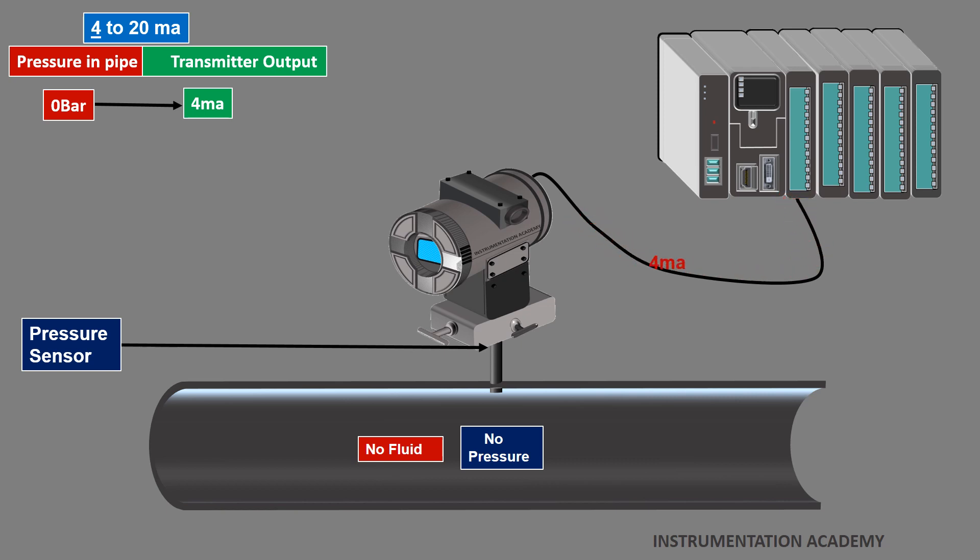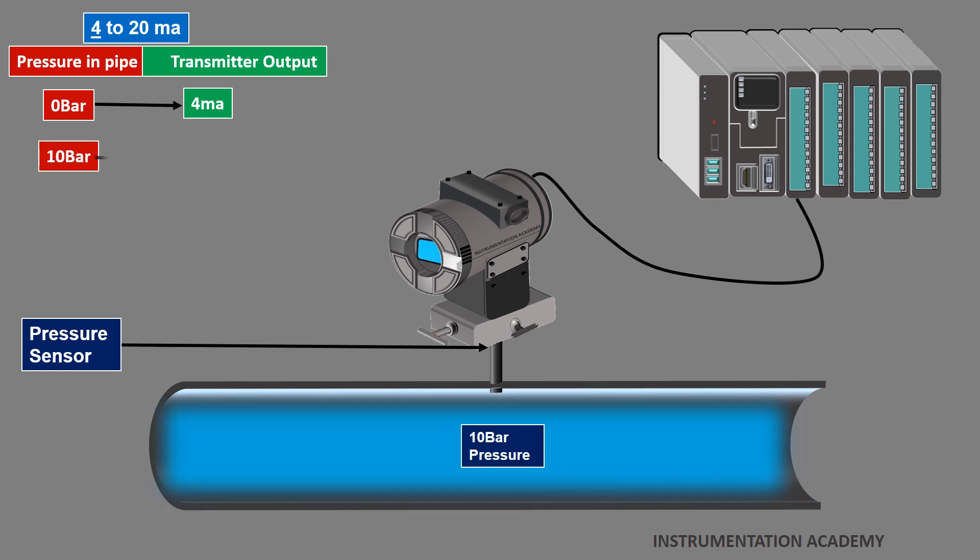If the pressure exerted on the sensor is at its maximum calibrated value of 10 bar, the transmitter generates 20 mA current signal at the output terminals.